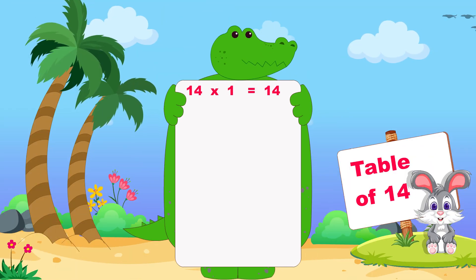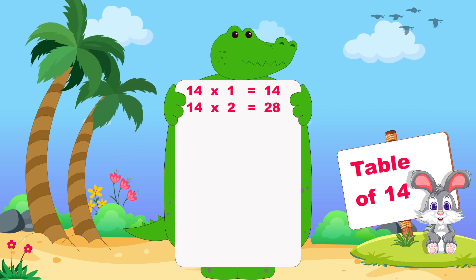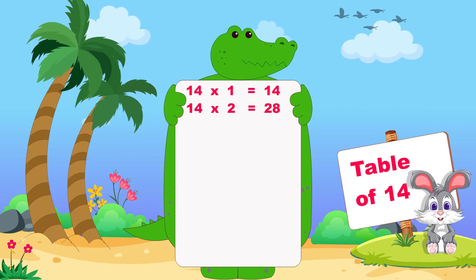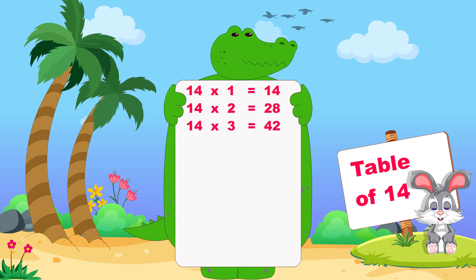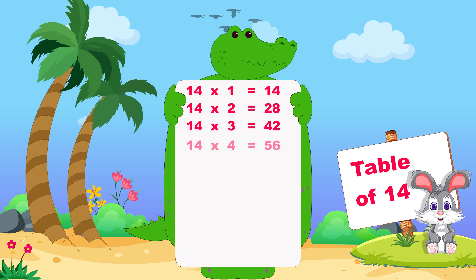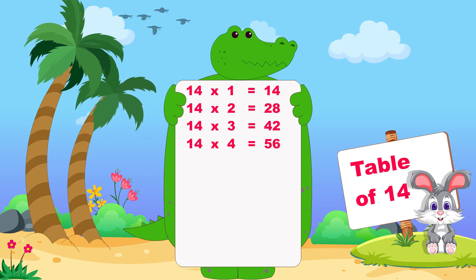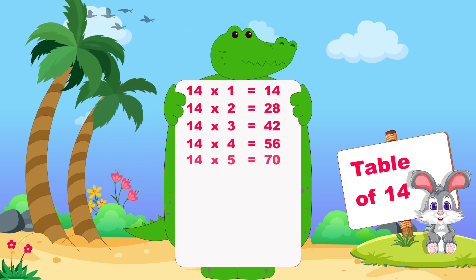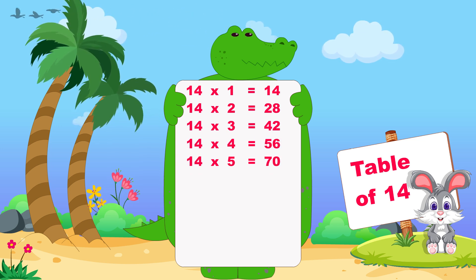Let's learn now table of fourteen. Fourteen ones are fourteen, fourteen twos are twenty-eight, fourteen threes are forty-two, fourteen fours are fifty-six, fourteen fives are seventy.